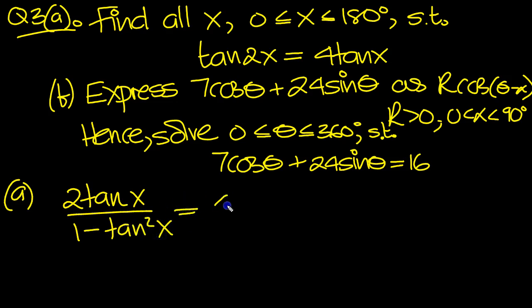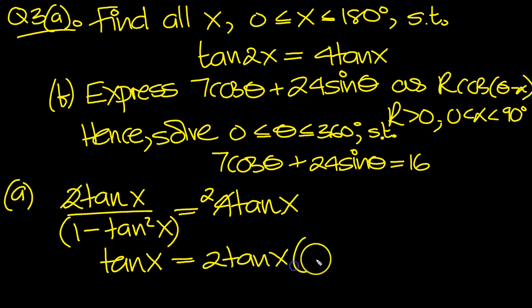That's tan 2x is equal to 4 tan x. Here we can cancel both sides by 2, can't we? Here and here. And then we can move this term that's underneath up onto the right-hand side. So tan x is equal to 2 tan x times 1 minus tan squared x.